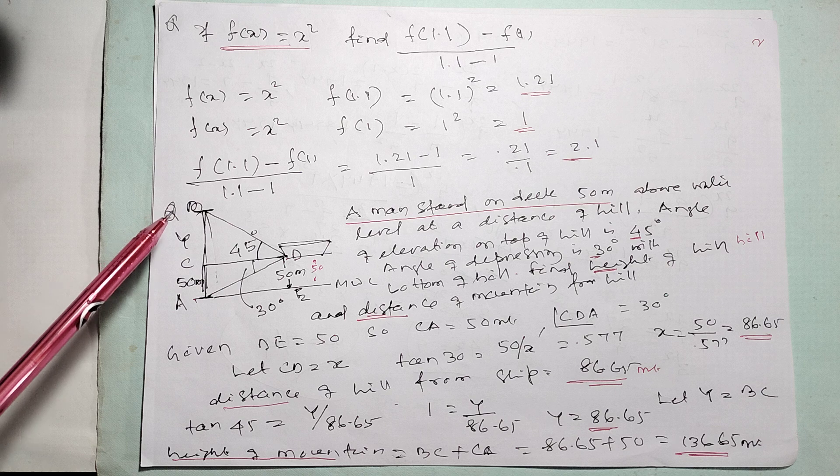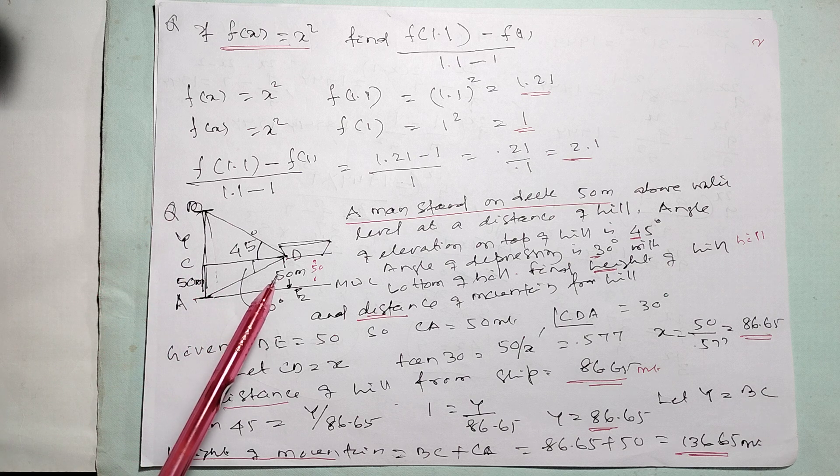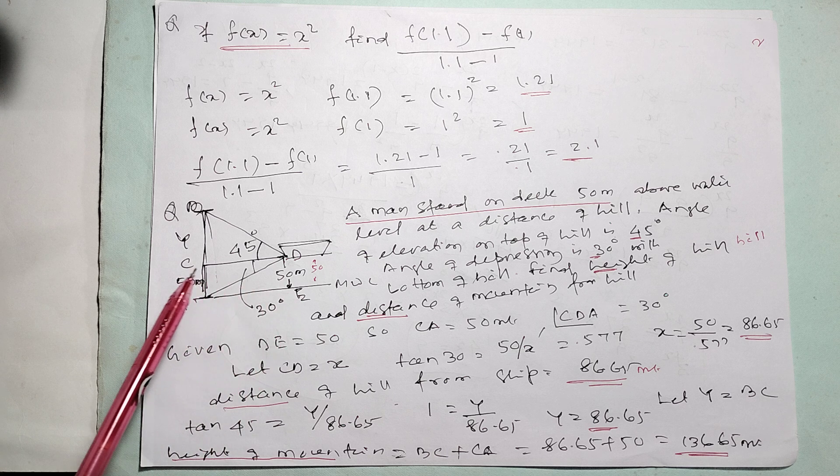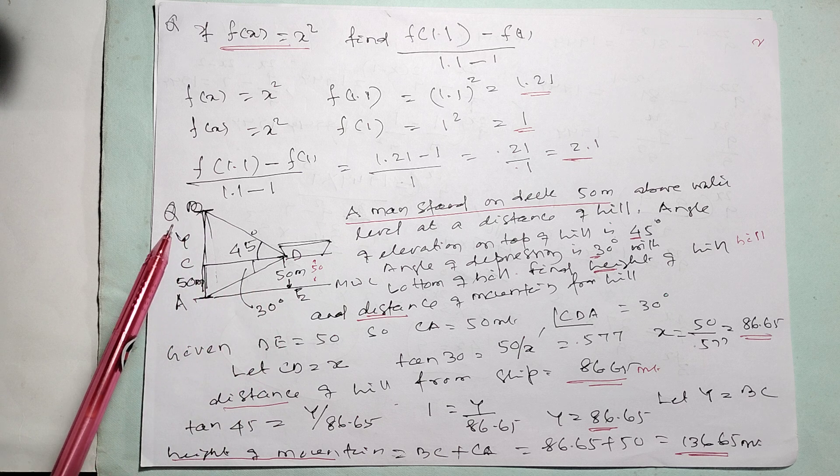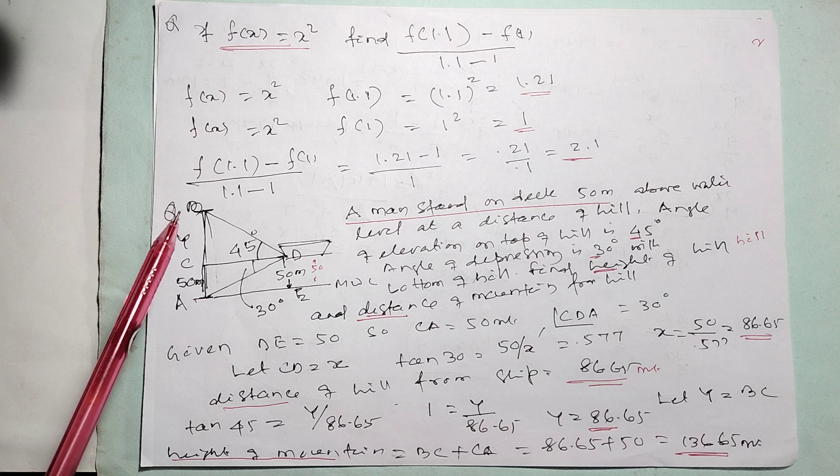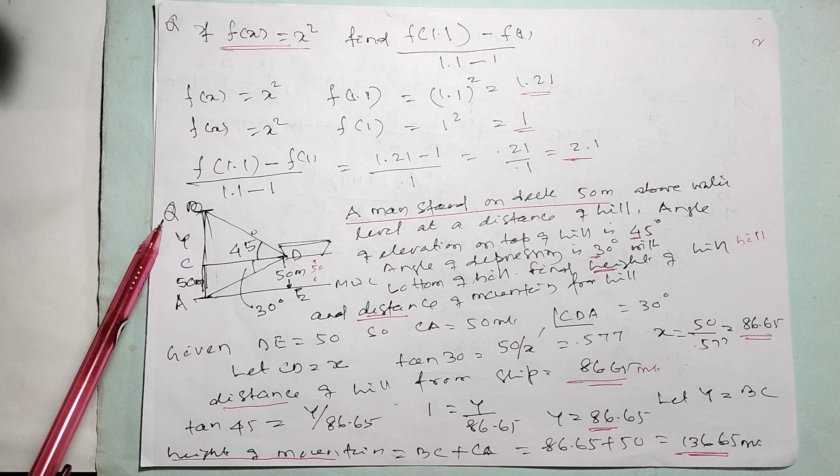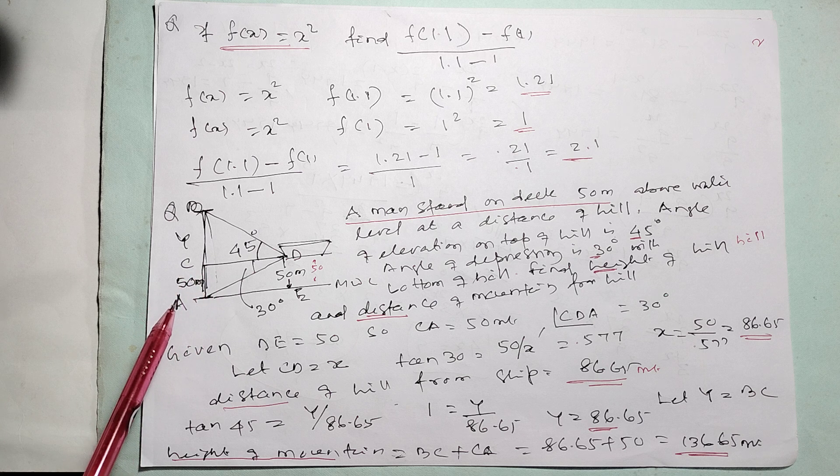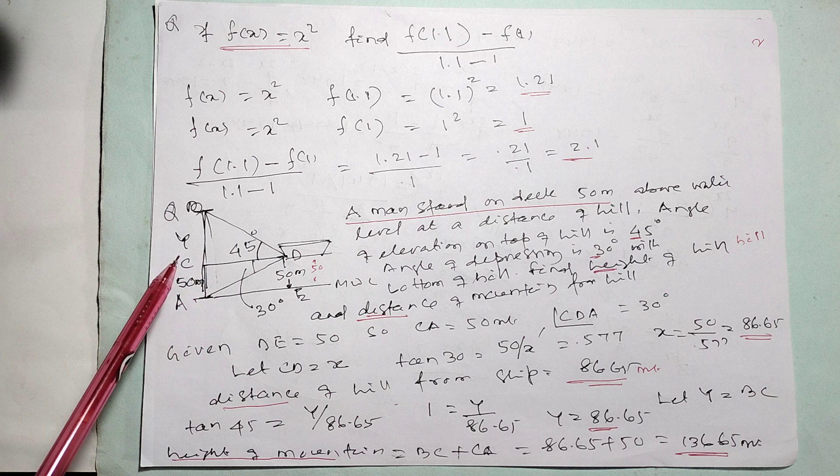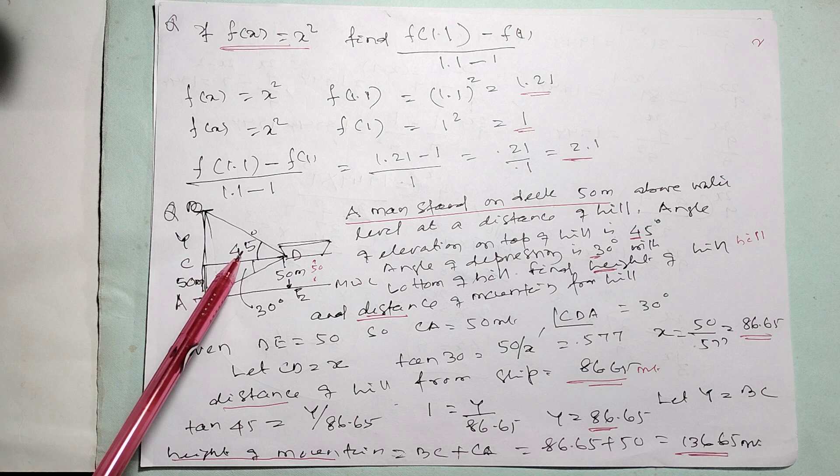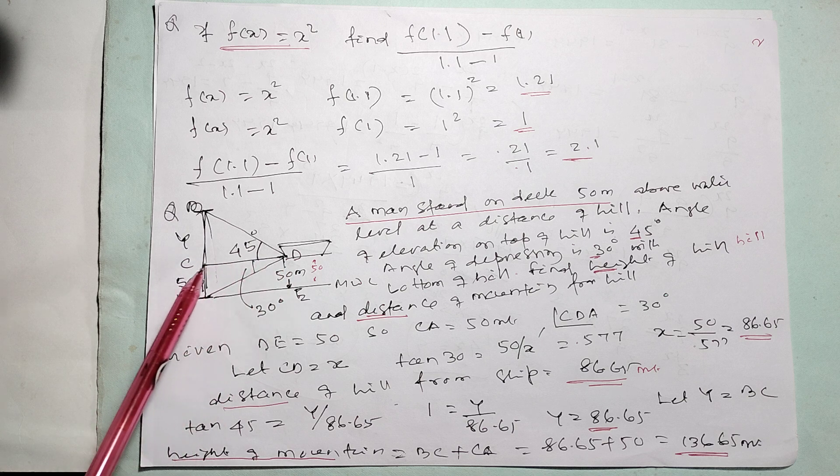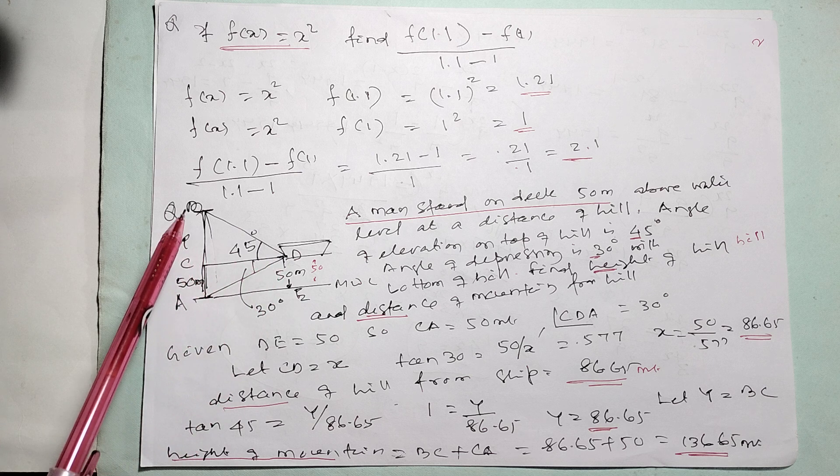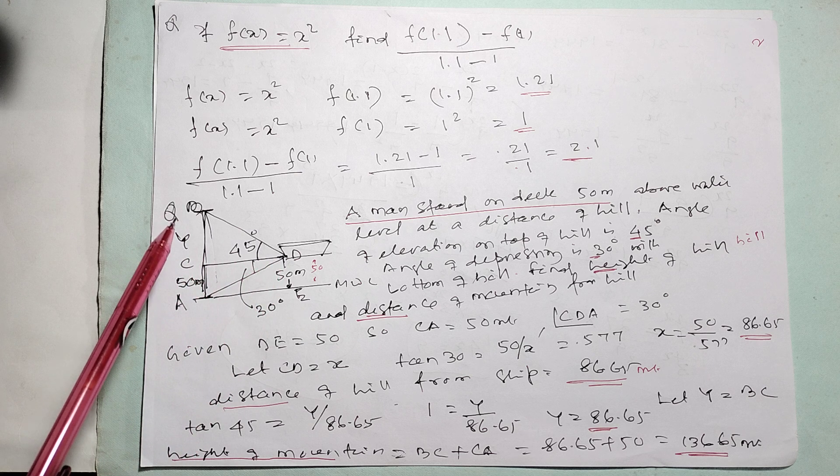Here, another problem from trigonometry. A person standing on a boat. The boat is at a height of 50 meter from the water level. Its angle of elevation is 45 degree with a mountain, and depression is 30 degree with a base of lower part of the mountain. If this is turned, let CD is equal to x. It is asking what is the distance between mountain and ship, that is the height of the mountain.